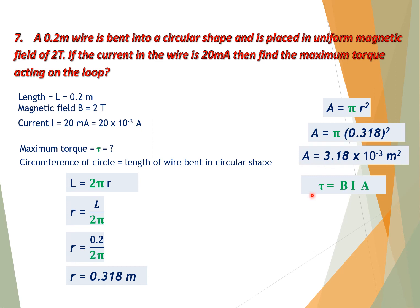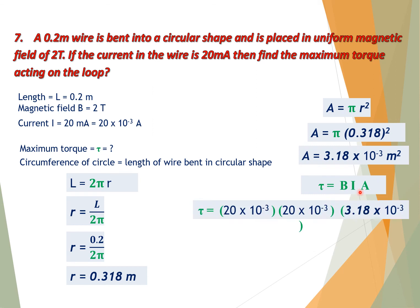Now we calculate the maximum torque. Maximum torque τ = BIA (since N = 1, one loop). Putting in the values of B, I, and A and solving, we get maximum torque τ = 1.272×10⁻⁴ N·m.